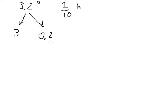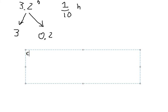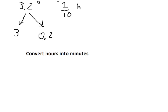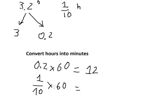We know we can convert hours into minutes. So we put 0.2 and multiply by 60, which equals 12. Then 1/10 converted to minutes: 60 divided by 10 equals 6.